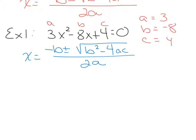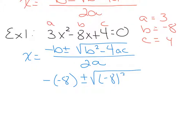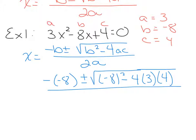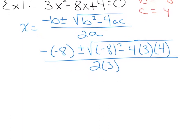Negative B would be negative negative 8, because B is already negative — this outer negative is always there. If your B is positive you will only have one negative, but if your B is negative you have two negatives — watch for that, it's probably the most common mistake. B squared will be negative 8 squared in parentheses, minus 4 times A (which is 3) times C (which is 4), all over 2 times A (which is 3).